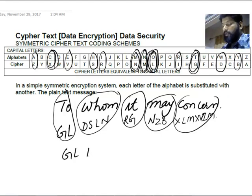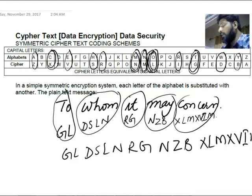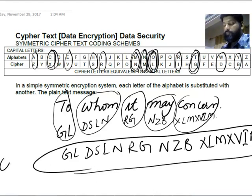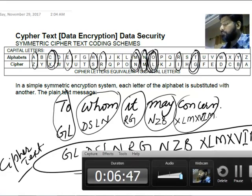So the final ciphertext result is: G-L-D-S-L-N-R-G-N-Z-B-X-L-M-X-V-I-M. This is the ciphertext answer. You have seen how the letters have been substituted for each of the characters. I hope you liked this — thanks for watching.